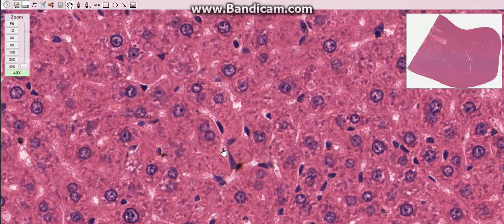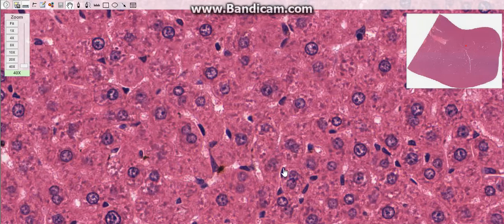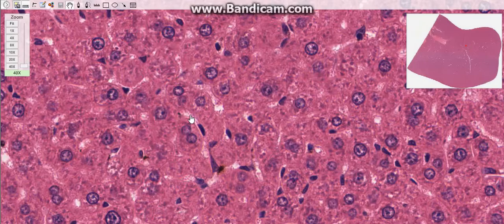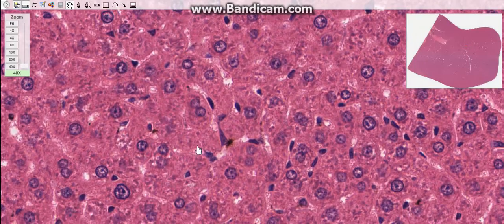The sinusoid lining cells, as I've just mentioned, are endothelial cells, Kupffer cells, hepatic stellate cells or Ito cells, as you can see here in this slide, the pit cells, and also the hepatocytes.